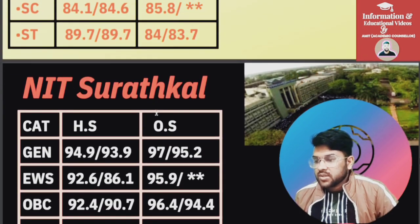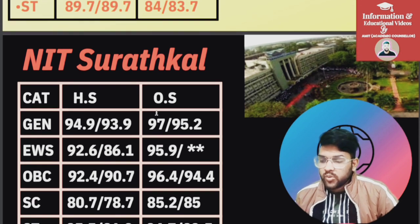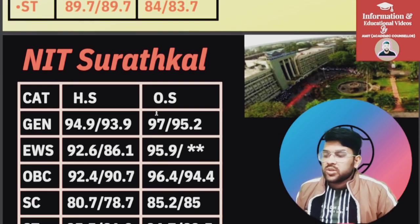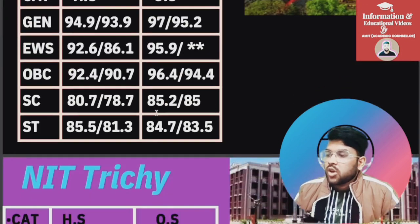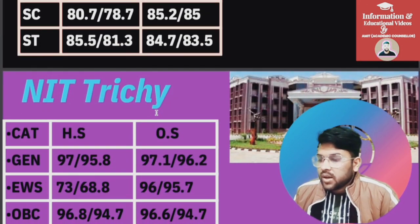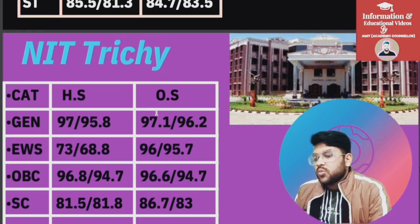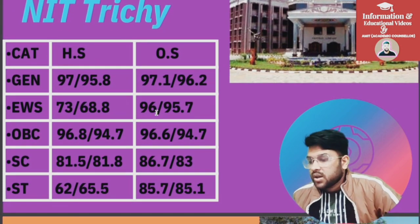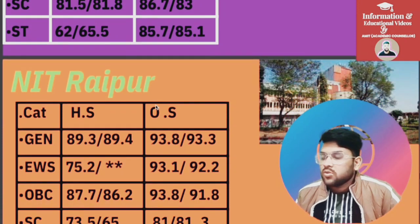For NIT Surathkal: General 97, EWS 95.9, OBC 96.4, SC 85.4, ST 85.2, and PD 84.7 respectively. For NIT Trichy: General 97.1, EWS 96, OBC 96.6, SC 86.7, ST 85.7 percentile.